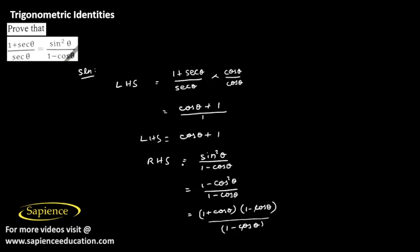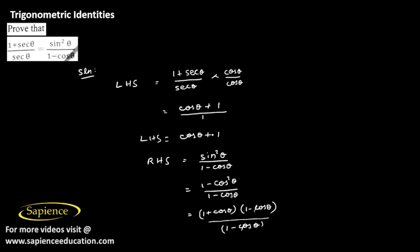The left hand side also gave us 1 plus cos theta after simplification, so LHS is equal to RHS. Hence proved.